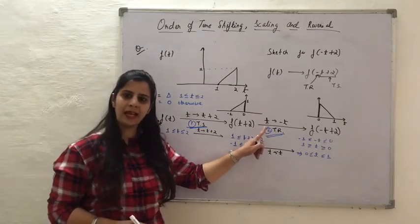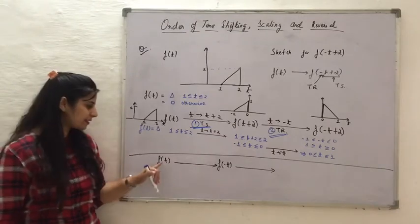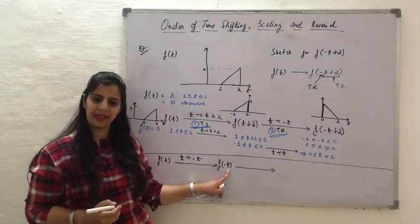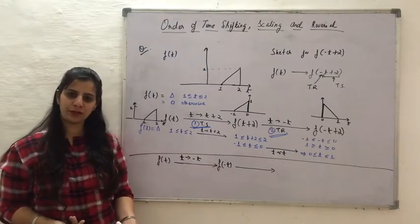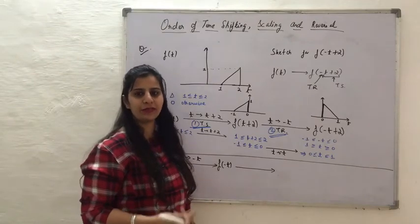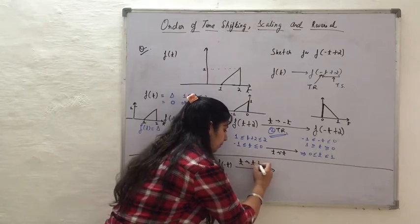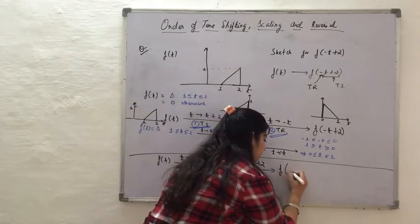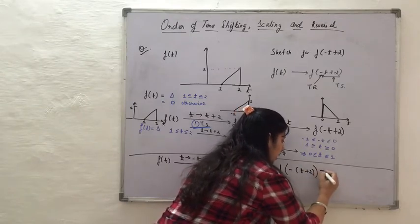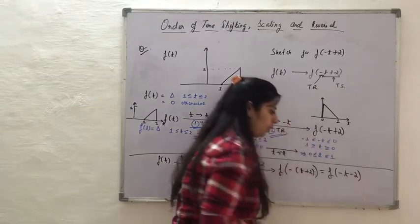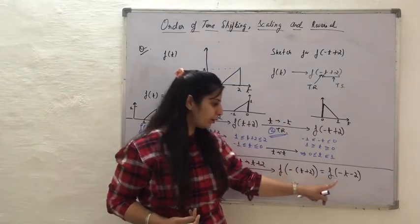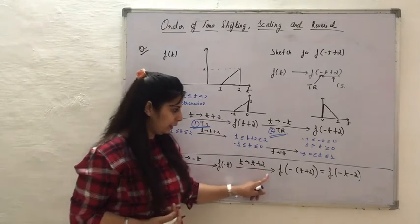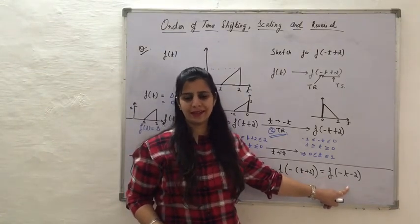Applying time reversal first: t changes to -t, replacing t with -t. Then applying time shifting where t changes to t+2, I substitute t+2 in the place of t, giving the function f(-(t+2)) = f(-t-2). But this is not the result we wanted — we wanted f(-t+2). So when applying time reversal first and then time shifting, we get the wrong answer.